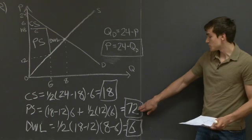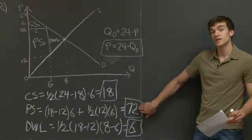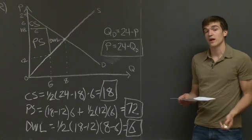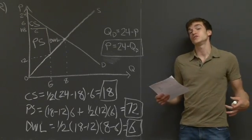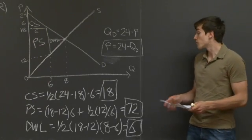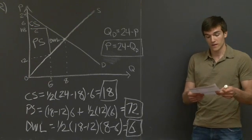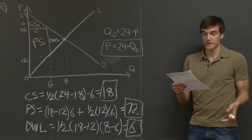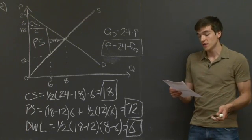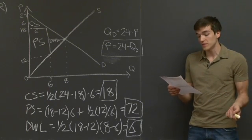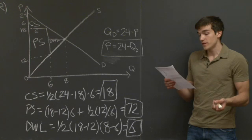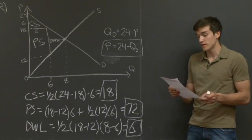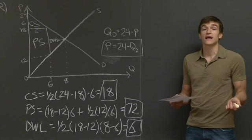The producer surplus is pretty high in this situation. The government is going to come in for Part B and say they have an intervention that might correct this market problem. Part B asks: how does charging the monopolist a specific tax of $8 per unit affect the monopoly optimum and the welfare of consumers, the monopoly, and society — where society's welfare includes the tax revenue?